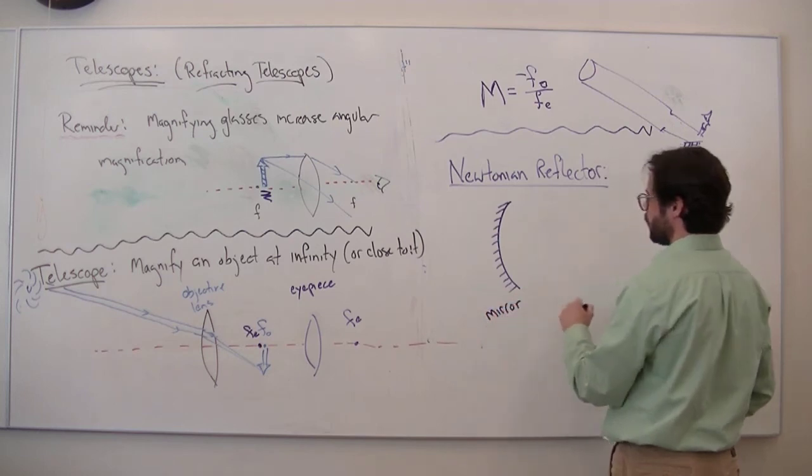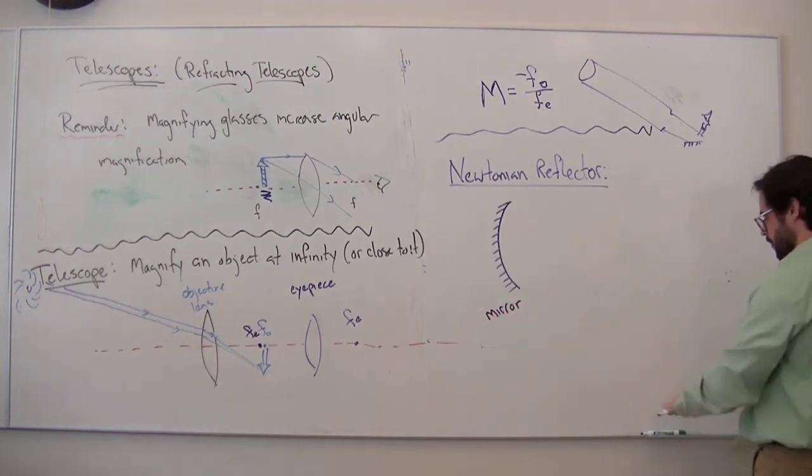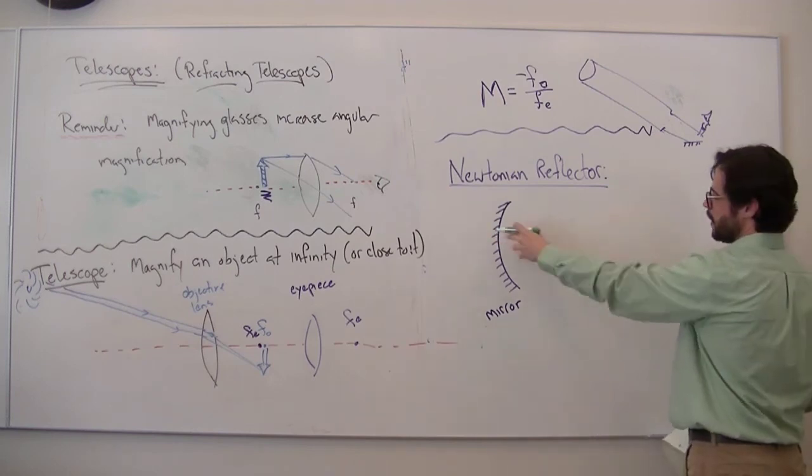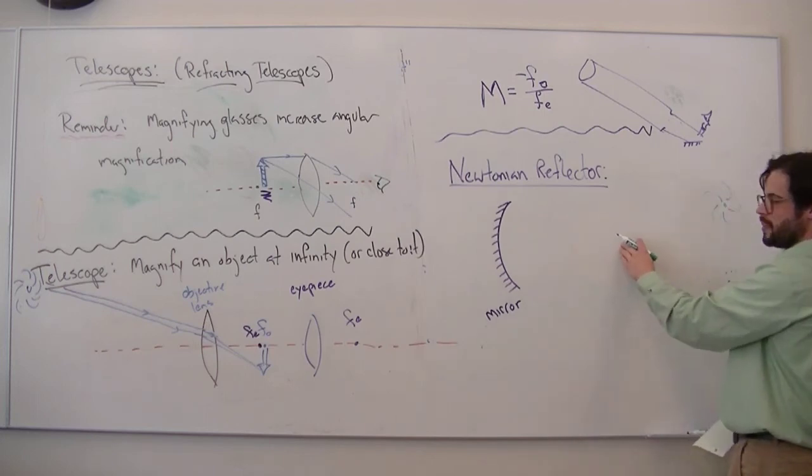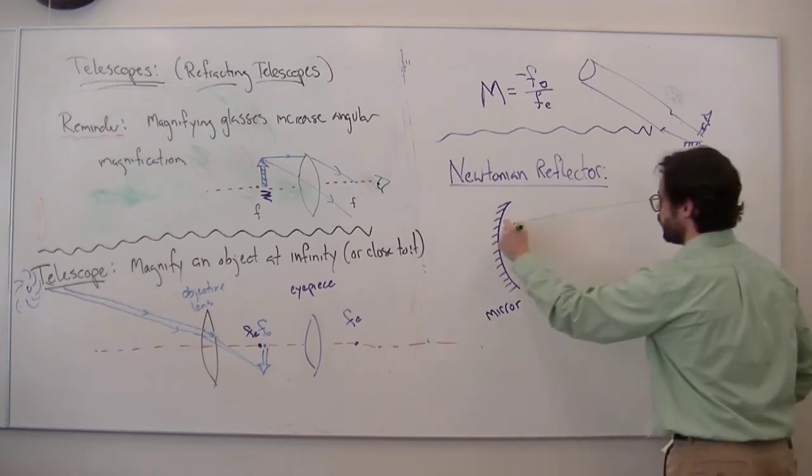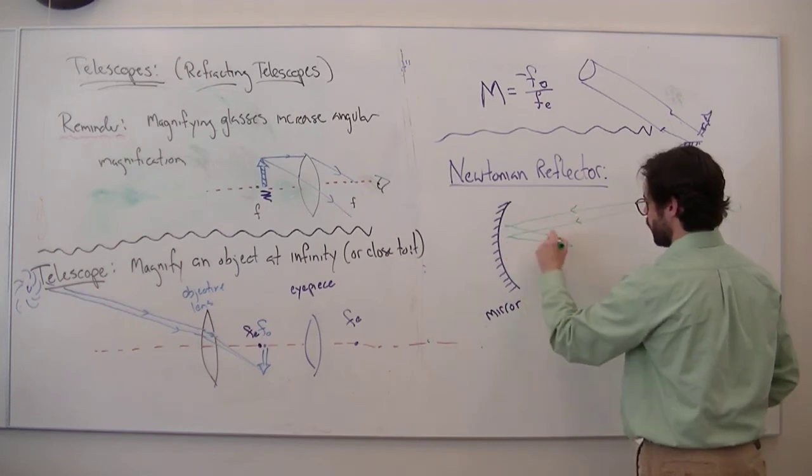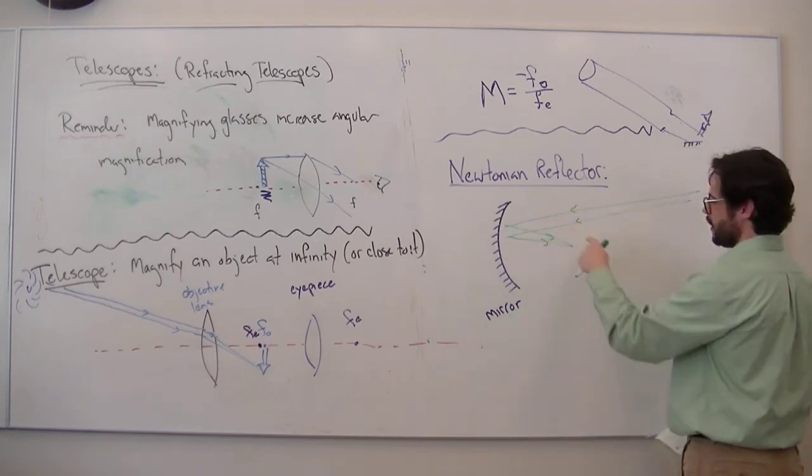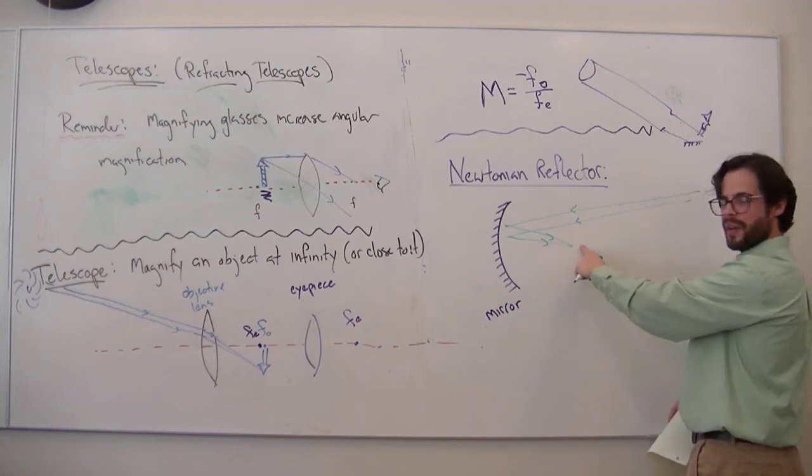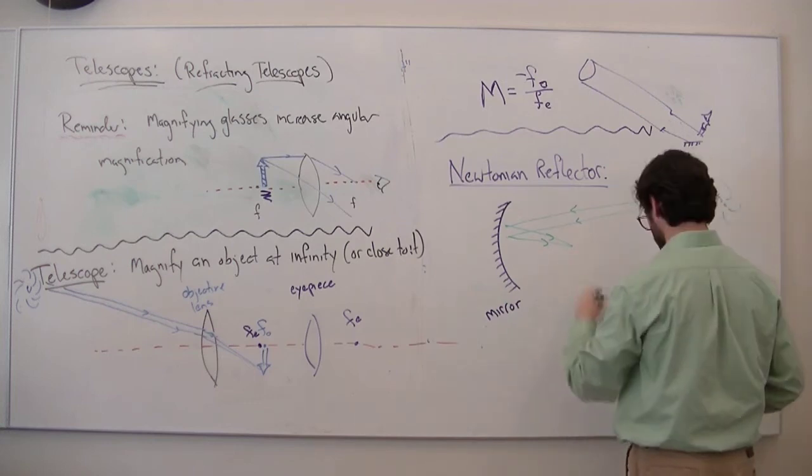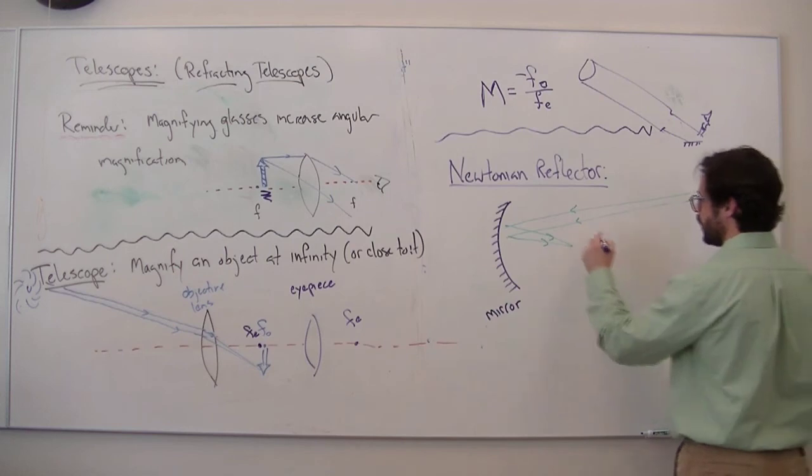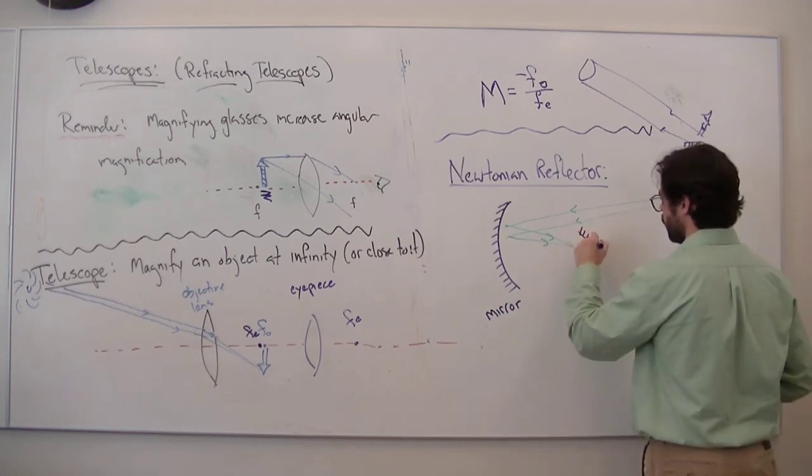So Newton embarked on this idea that maybe instead of this, I could have a mirror. What's the problem with using a mirror to image your light from infinity and look at this distant galaxy? Well, the problem is the light's going to come in and the light's going to reflect. It's going to come to a focal point, so that part I have no problem with. So light comes in from infinity, light focuses at the focal point. Well, the problem is my head's in the way if I want to look at this.